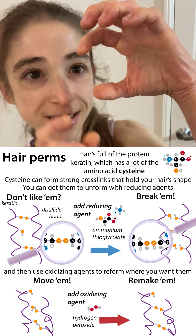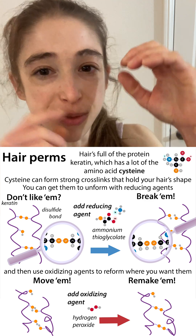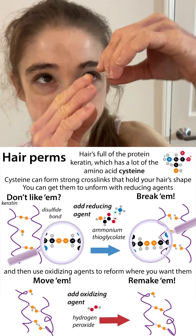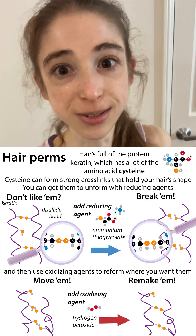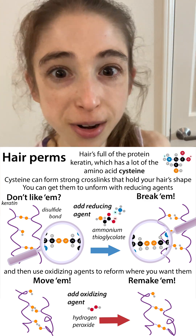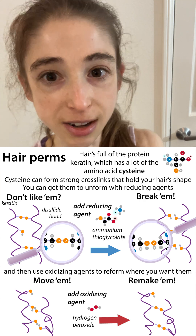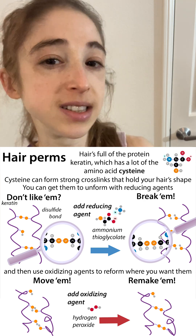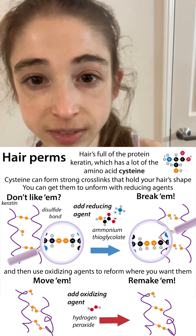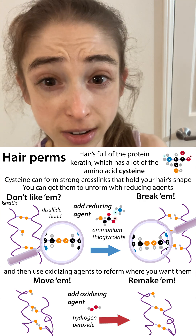And depending on where they're positioned, when those bonds form, you get curls or you get no curls. And by manipulating the crosslinks, you can actually do things like permanent waves — get permanent curls in hair.